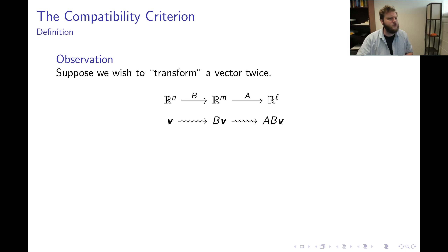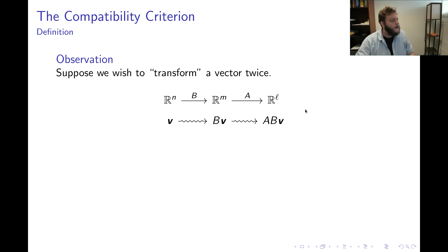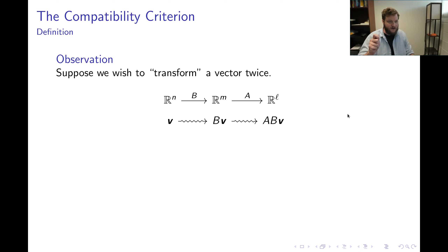In order to discuss this issue, it's crucial to understand the setup and the context. The general concept is: the reason I want to multiply matrices together is because I want to transform vectors multiple times.